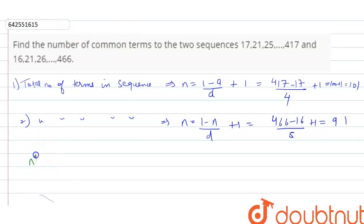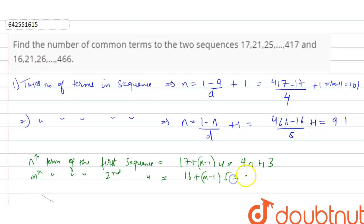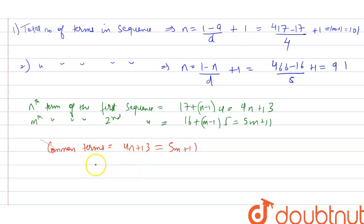The nth term of the first sequence is equal to 4n + 13. The nth term of the second sequence is equal to 16 + (m - 1) × 5, that is 5m + 11. For common terms, we set 4n + 13 = 5m + 11.